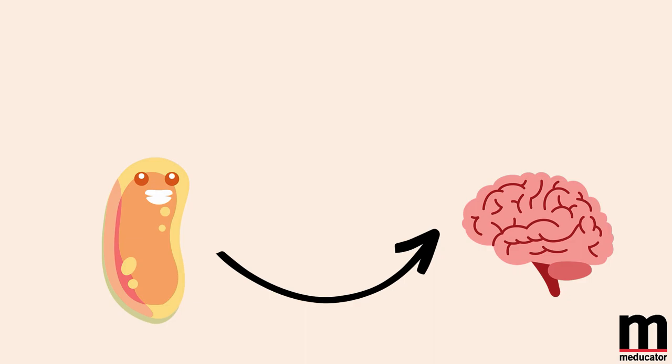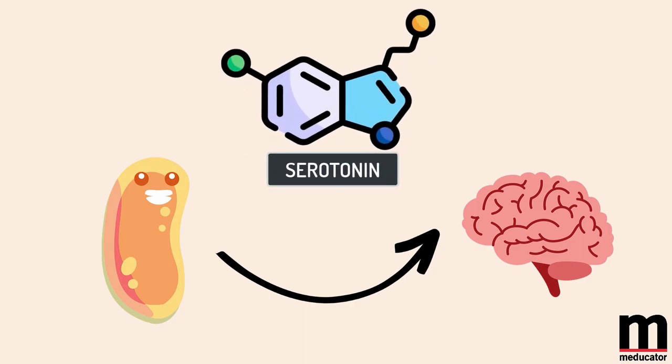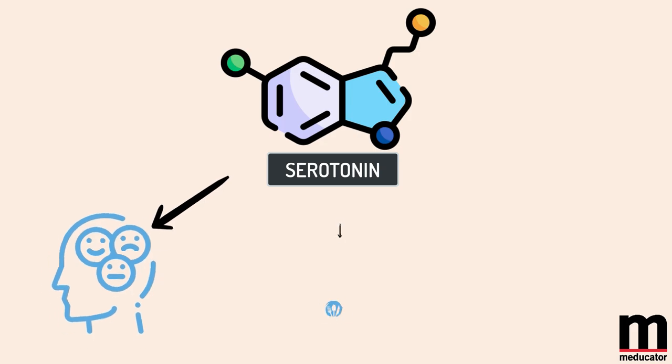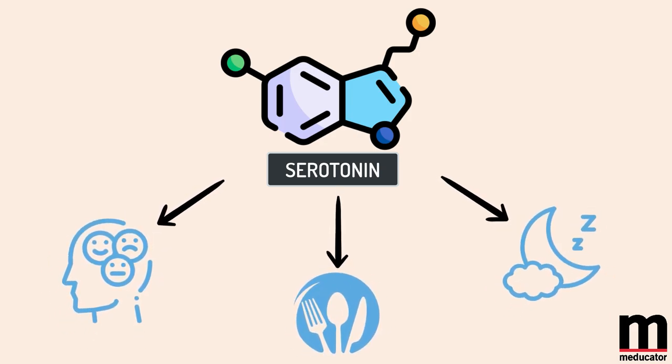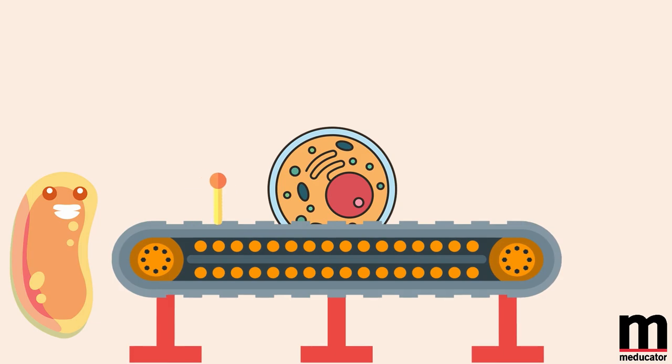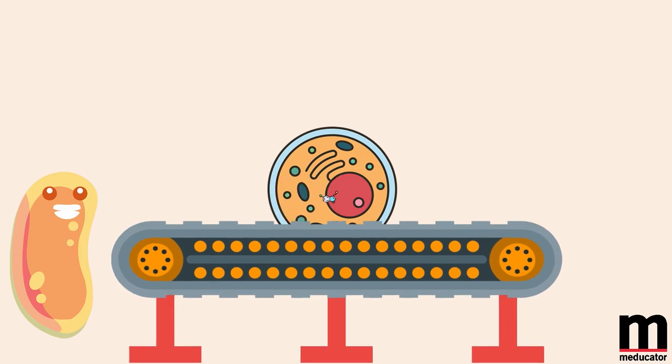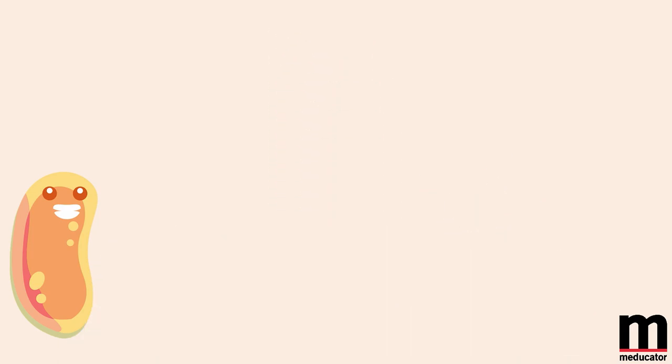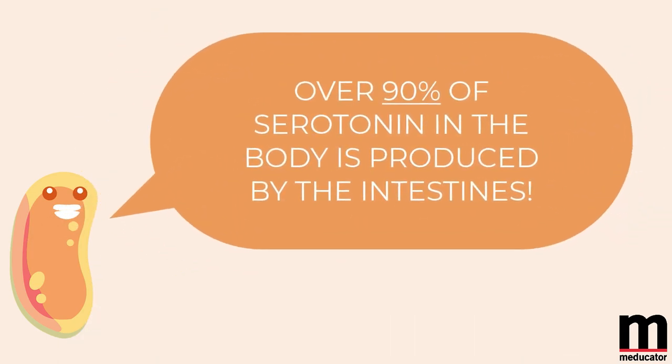One of the most significant contributions the gut microbiota makes to brain functioning is through the production of serotonin, the neurotransmitter that regulates our mood, appetite, and sleep patterns, and its deficiency is closely associated with the development of depression and anxiety. The short-chain fatty acids produced by the microorganisms in our gut feed the cells responsible for producing serotonin. In fact, over 90 percent of the serotonin in our bodies is produced by the intestines.